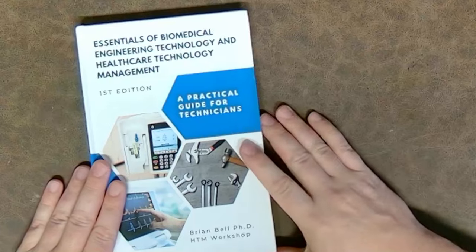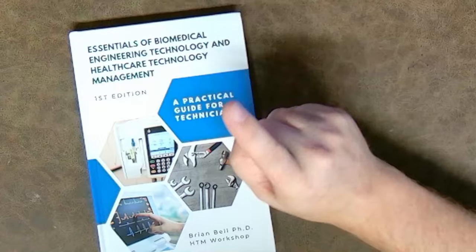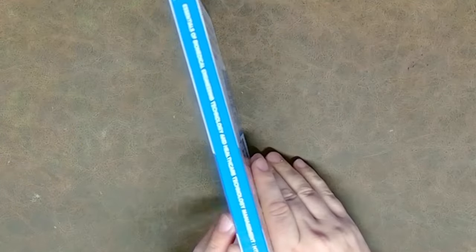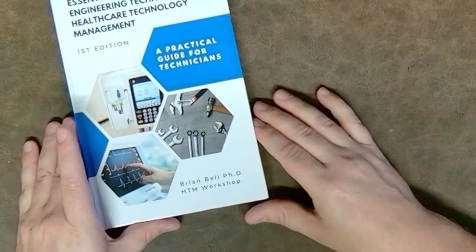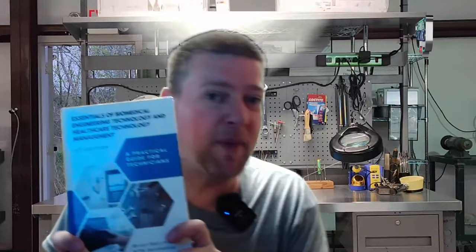Well guys, that is Essentials of Biomedical Engineering Technology and Healthcare Technology Management, first edition, practical guide for technicians. It is 200 and some pages, a fantastic book. Guys, if you're studying to be certified or if you're a Biomed 1 and you want something in your library so you can quickly glance something up, if you don't know a certain topic and you want to advance yourself in any way possible, I highly suggest you guys check this book out. Link is going to be in the video description. Help support a fellow clinical engineer and his mission to advance this entire career field.